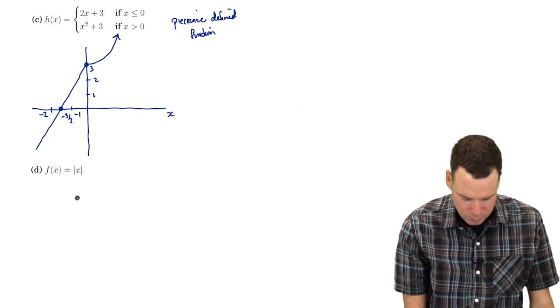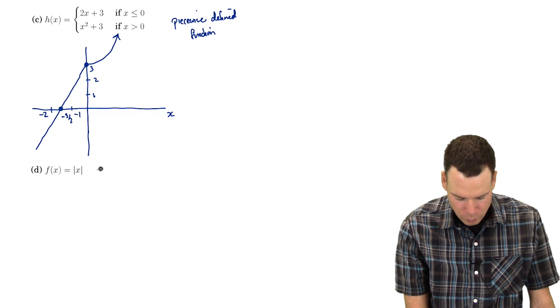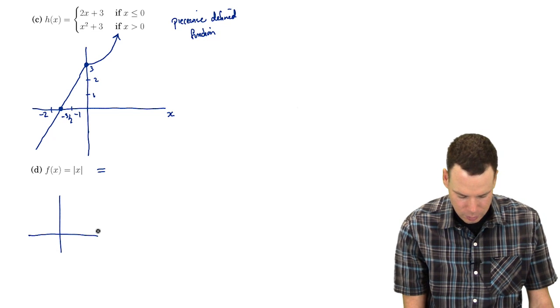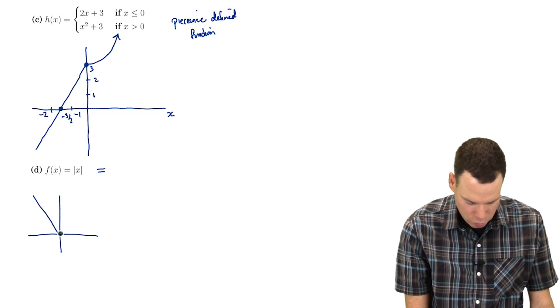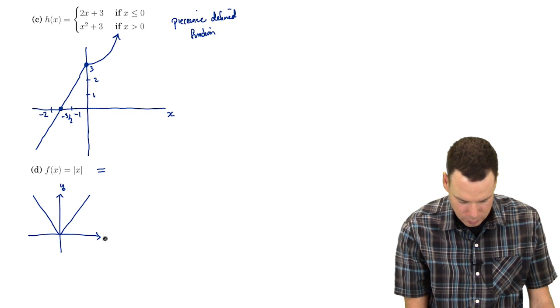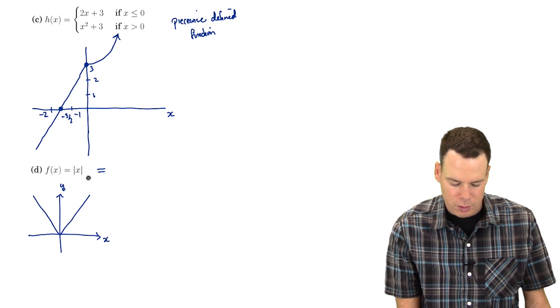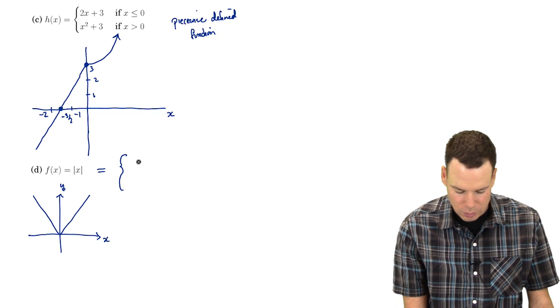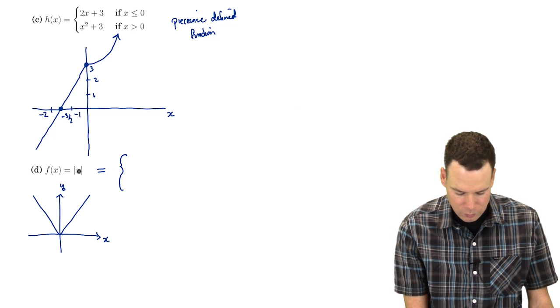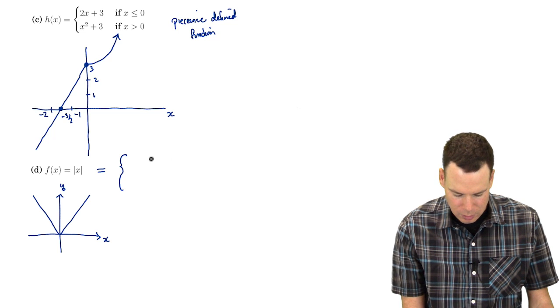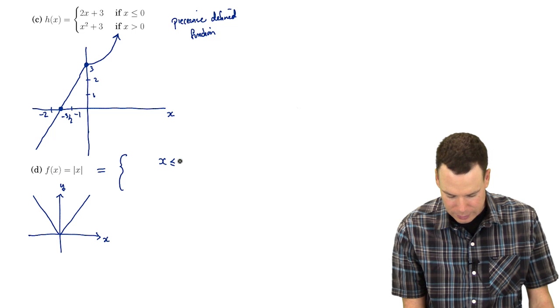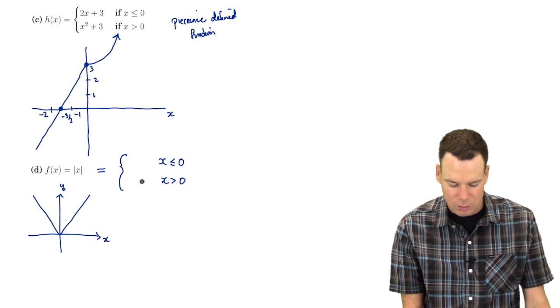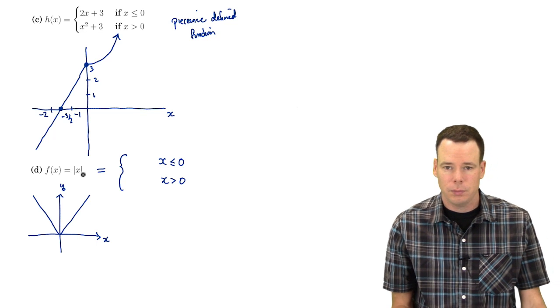Alright, and this last example for sketching is the absolute value function. So I wanted to include this one. You might know immediately already what the absolute value function looks like. Maybe we'll just sketch it quickly. It's got this sort of v-shape to it. There's our y-axis and there's our x-axis. But more importantly I want to talk a little bit about the absolute value function and how it's defined as a piecewise defined function. So we're going to use this quite a bit throughout this course. So the absolute value of x, it's defined in pieces. What happens when x is less than or equal to 0? And what happens when x is bigger than 0? Maybe I'll start with what happens when x is bigger than 0. When I take a number bigger than 0 and I take its absolute value, what happens?